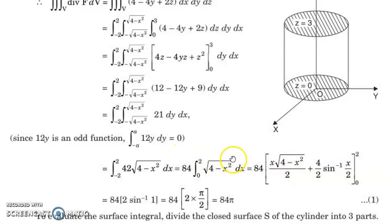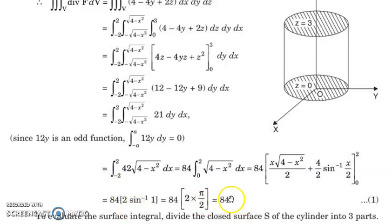So the triple integral evaluates to 21 times 4pi, which equals 84pi. That is the required value of the volume integral. Now we have to evaluate the surface integral.